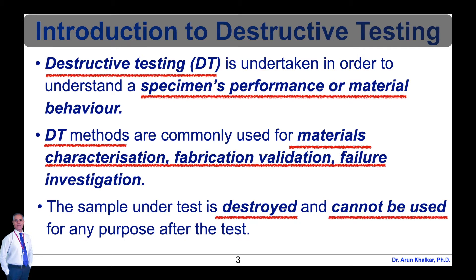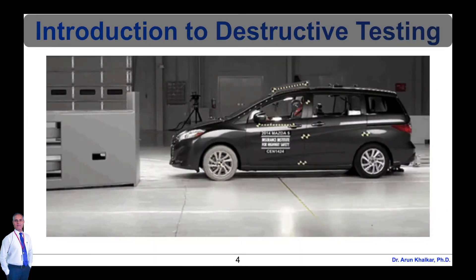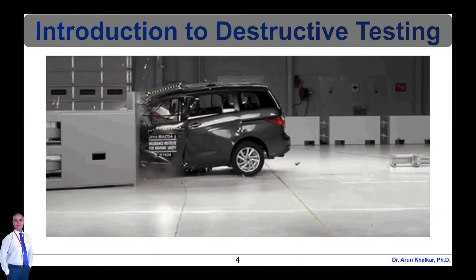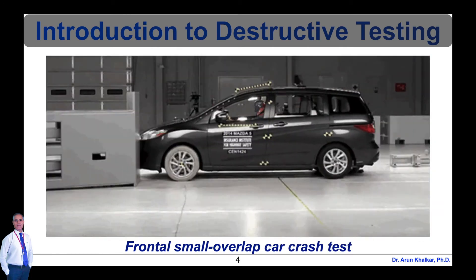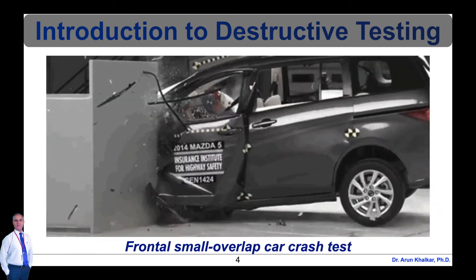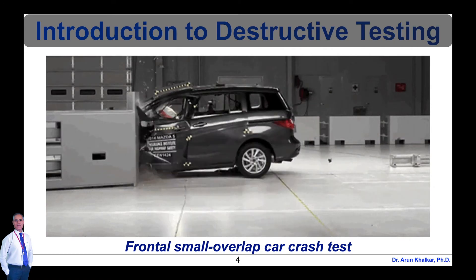Examples are tensile test, impact test, etc. These tests are performed on sample material out of the batch. These tests are used to find out mechanical properties like hardness, compressive strength, yield strength, and tensile strength, etc.